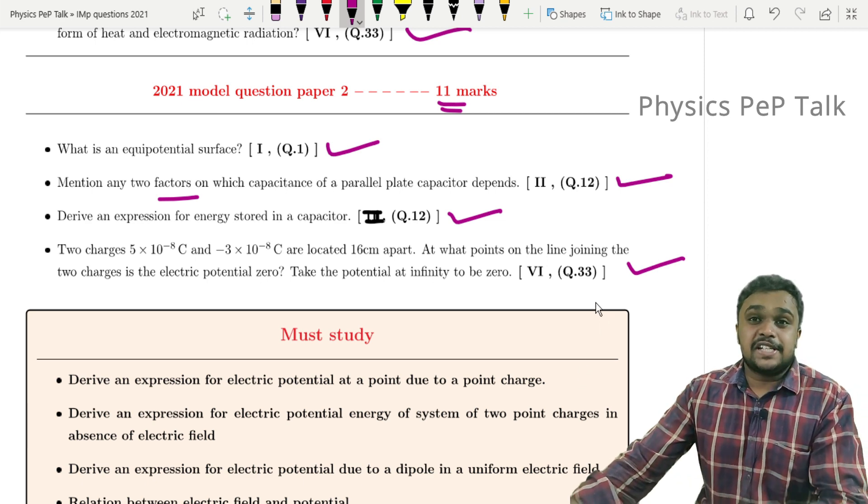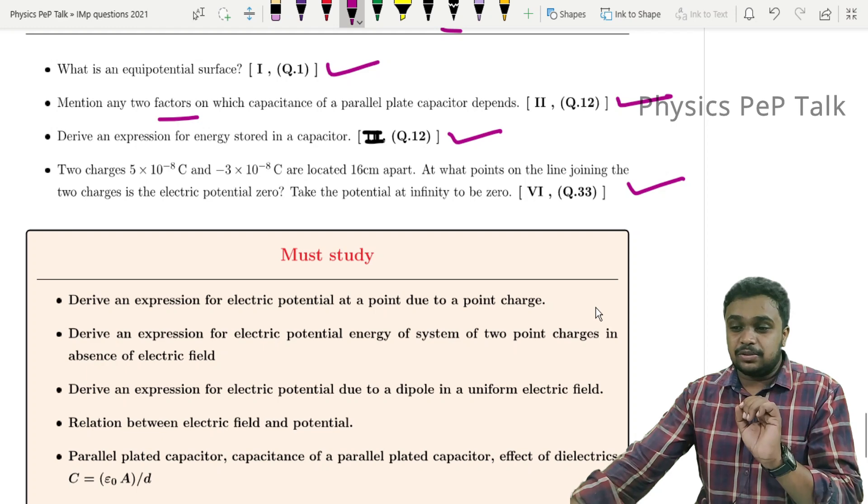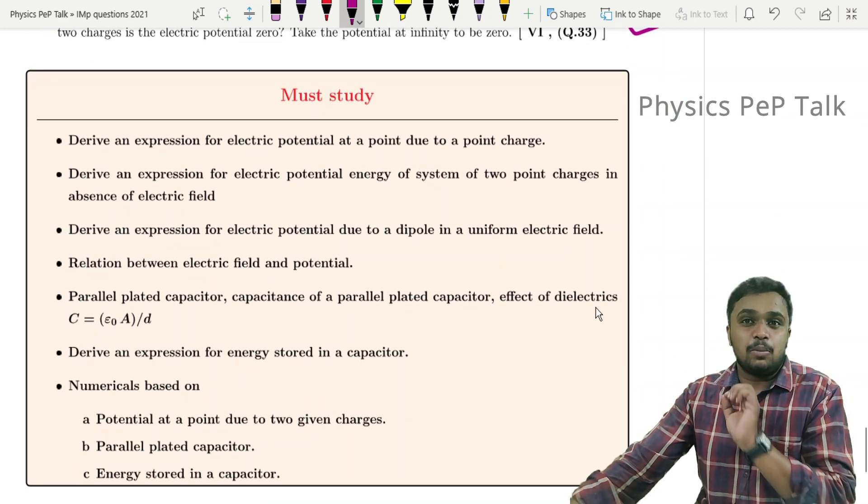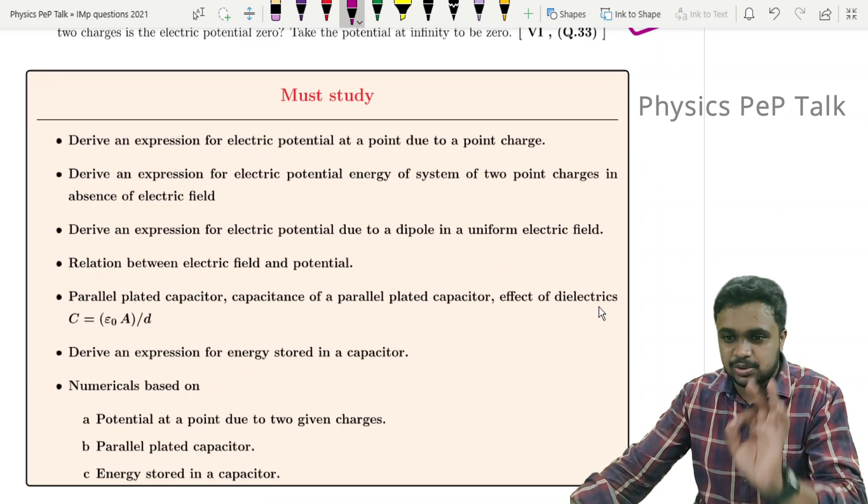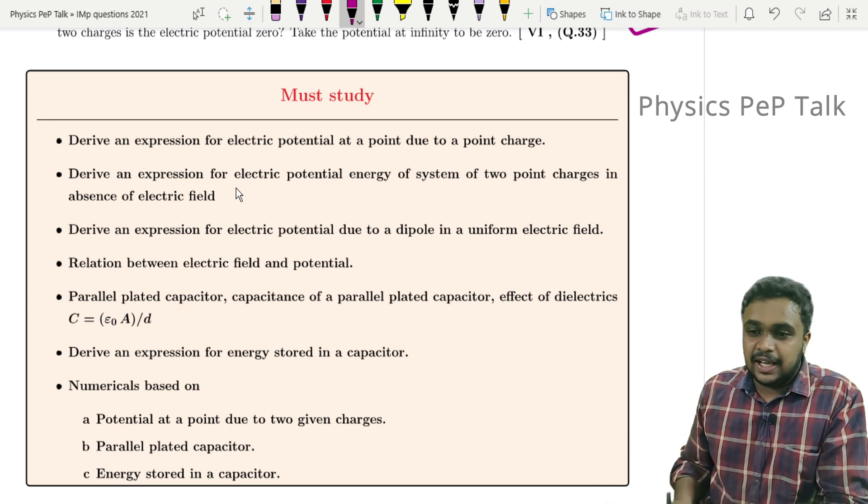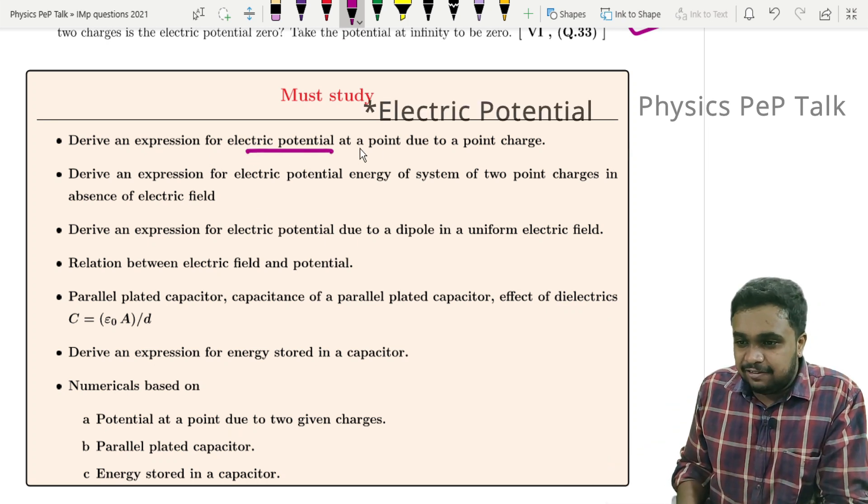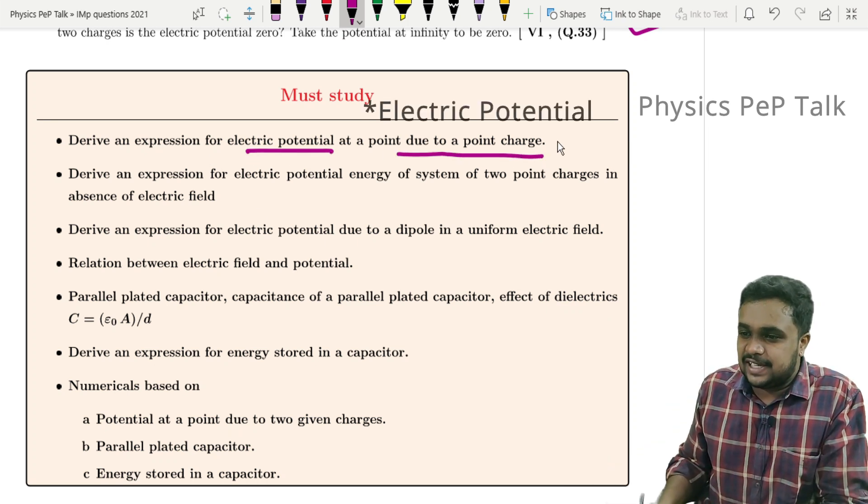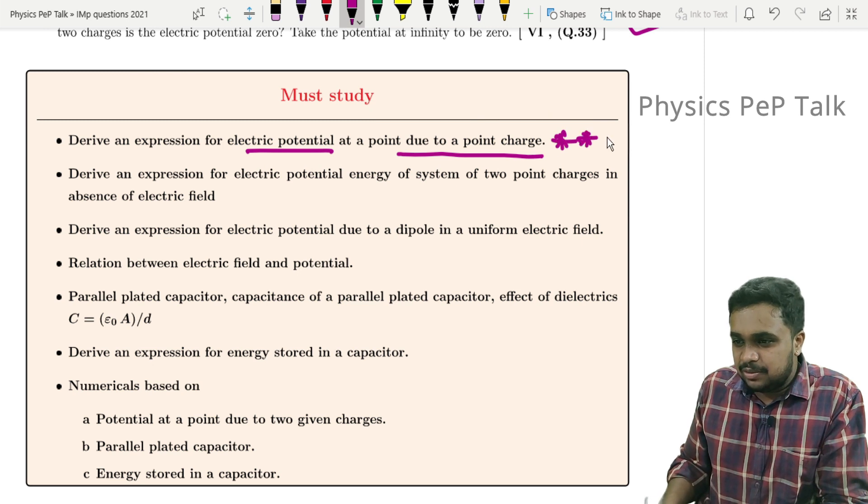In this way, the important topics in this chapter - most of the questions you must attend. First: derive an expression for electric field at a point due to a point charge. This was asked in previous years.